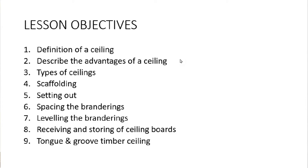Number two: describe the advantages of a ceiling. Number three: types of ceiling. Number four: scaffolding. Number five: setting out a ceiling. Number six: spacing the brandering of a ceiling. Number seven: leveling the branders of the ceiling. Number eight: receiving and storing ceiling boards. Number nine: the tongue and groove timber ceiling. Now let's look at the first objective.